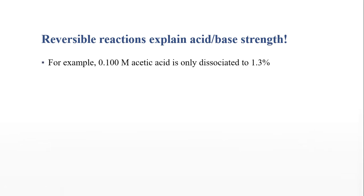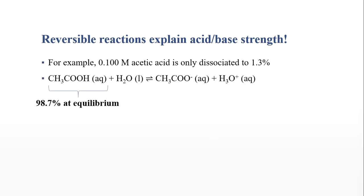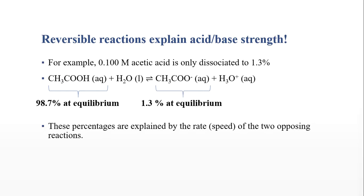Whenever we have two opposing reversible reactions happening at the same time, they eventually reach a point where the concentrations on either side remain unchanged — they're constant. So for 0.100 molar acetic acid, it's only dissociated to 1.3%. When we've reached equilibrium, 98.7% of the units will be in the acid form and 1.3% will be in the base form — the conjugate base. These percentages, translated to concentration, are unchanged over time.